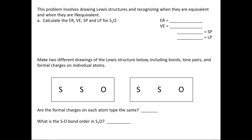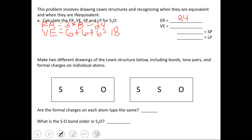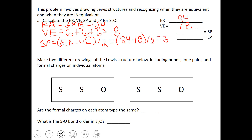Let's start with disulfur monoxide, S2O. First we're going to do our calculation. Our electrons required will be 3 atoms times 8 for each atom, or 24. Sulfur is in group 6 and oxygen is in group 6, so our number of valence electrons is 18. Our shared pairs will be the difference between electrons required and valence electrons divided by 2, giving us 24 minus 18 divided by 2, or 3 shared pairs.